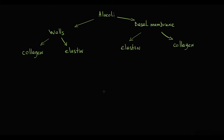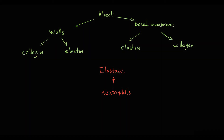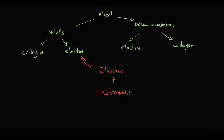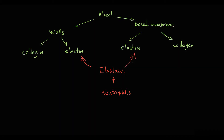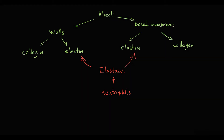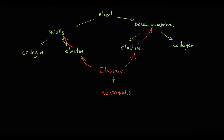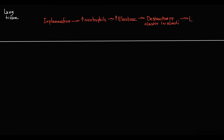So when neutrophils release elastase in the lung tissue, it's like a fire amid gasoline. This proteolytic enzyme rapidly destroys elastin fibers, thereby causing severe damage to the walls of alveoli and also to the basal membrane — this condition is called emphysema.